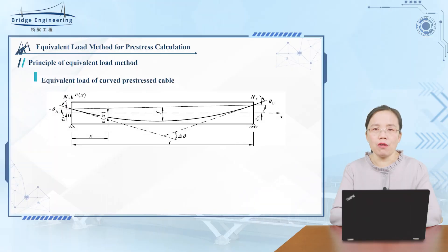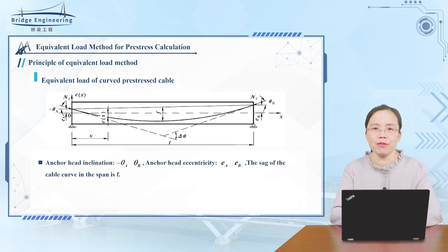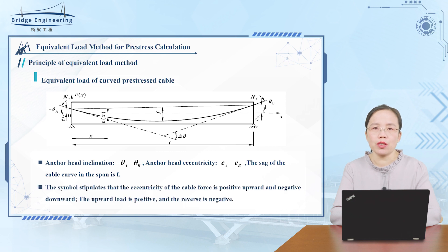Equivalent load of curved pre-stressed cables. As shown in the figure, the inclination angle of the left end of the pre-stressed concrete simply supported beam with curved cables is angle A, and the distance from the central axis is eccentricity Ea. The inclination angle of the right anchor end is angle B, the eccentricity is Eb, and the sag of the cable curve in mid-span is F. The sign convention specifies that eccentricity Ea of the cable curve is positive upward and negative downward; upward load is positive and downward is negative.